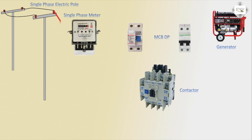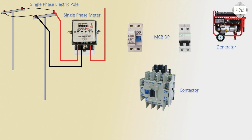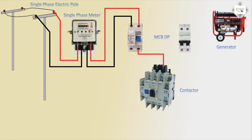Conductor from pole to single phase energy meter — positive connection and negative connection. Energy meter negative and positive input connection complete, outgoing to DP connection — positive and negative DP connection. DP outlet to magnetic contact coil A2, A1 connection — coil connection is complete. Magnetic contact L1, L2 connection: L1 positive, L2 negative.